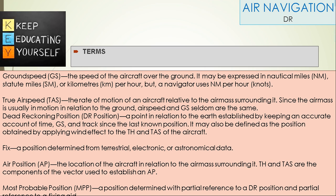True Air Speed: The rate of motion of an aircraft relative to the air mass surrounding it. Since the air mass is usually in motion in relation to the ground, air speed and ground speed seldom are the same.